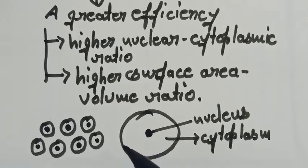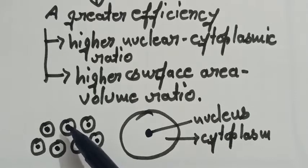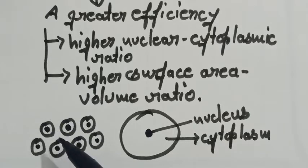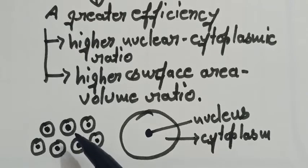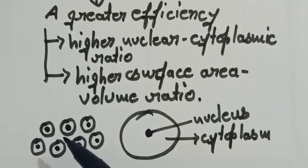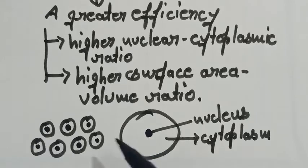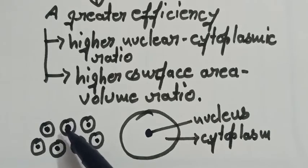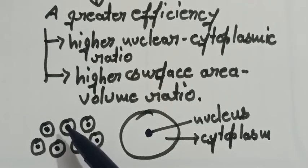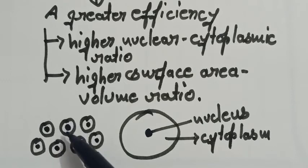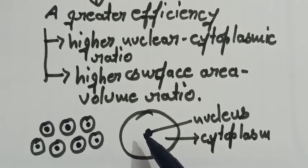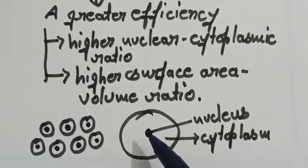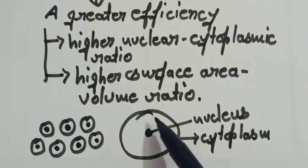The higher nuclear cytoplasmic ratio allows nucleus to better control the metabolic activities. Whereas, higher surface area volume ratio allows quicker exchange of material between the cells and its surroundings. Like in this example, these cells are having comparable amount of cytoplasm and nuclear ratio, so their nucleus is able to perform the function, to control the various cytoplasmic substances. Whereas, here if we compare the cytoplasm and nucleus, the nucleus is much smaller and that is why it will be difficult for the nucleus to control the metabolic activities.